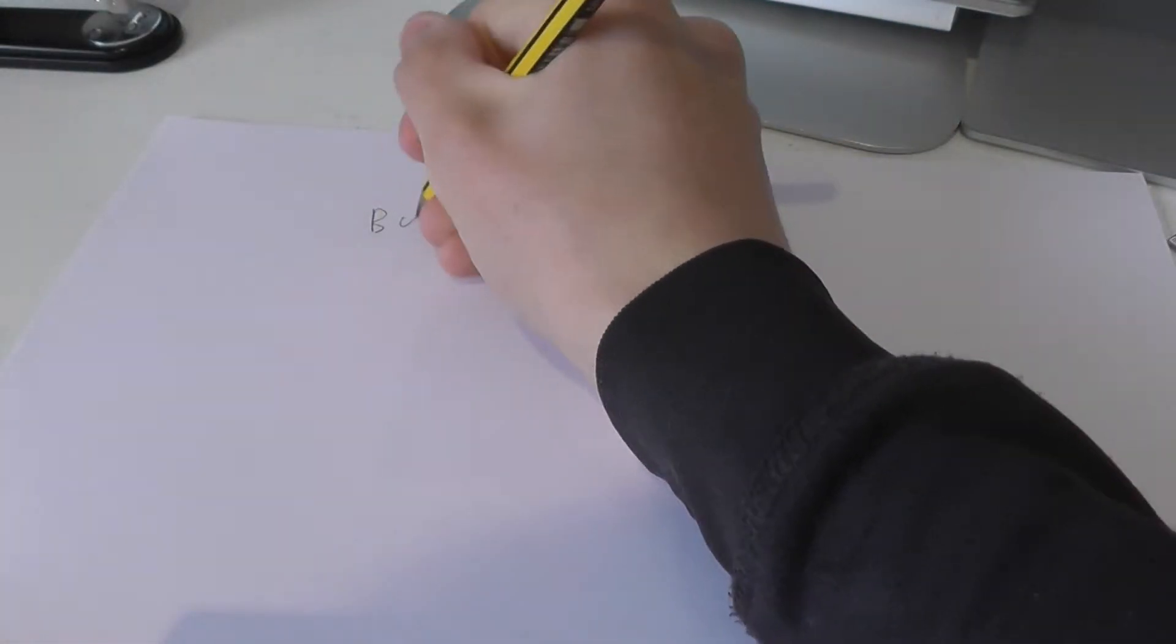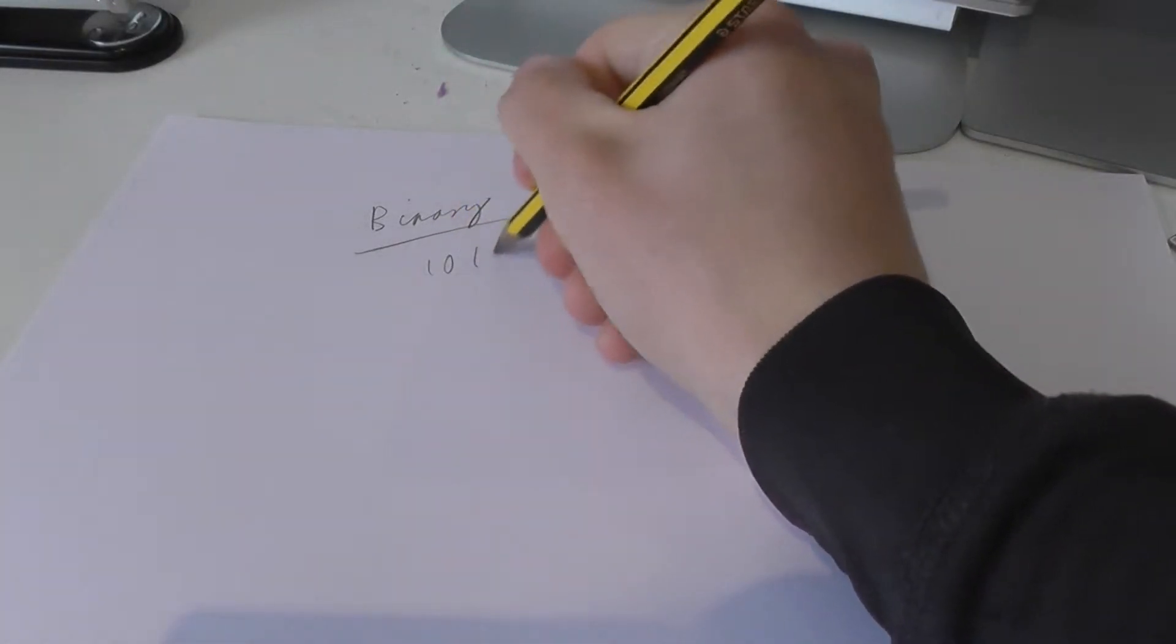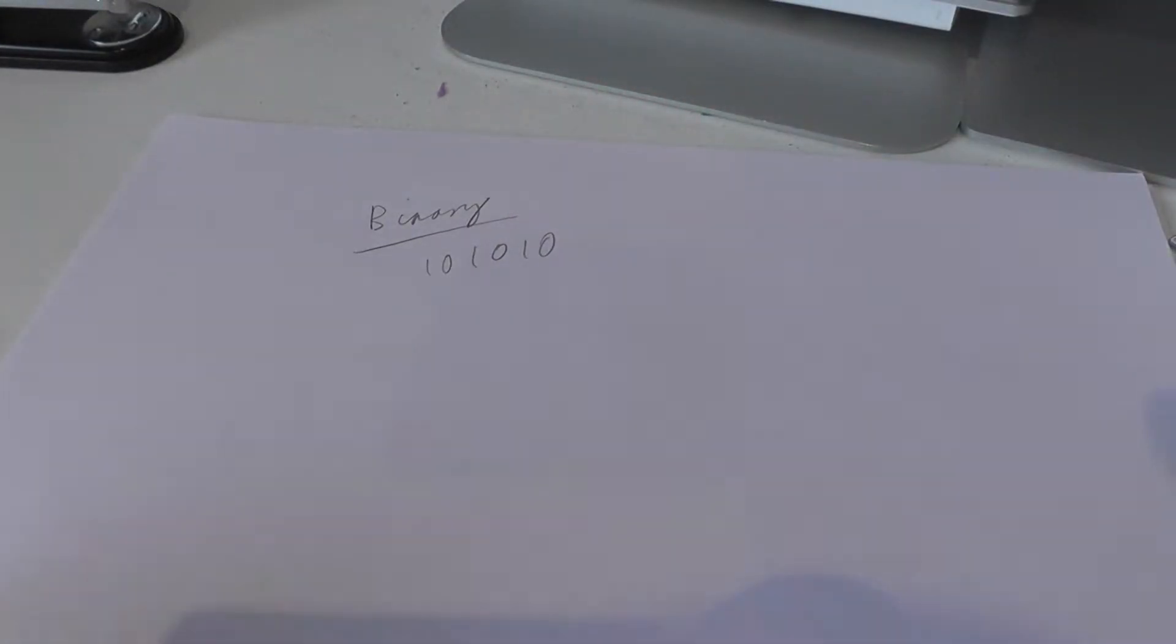I'm going to be explaining to you today how binary works. Binary is the string of ones and zeros that you usually see about how computers understand things. But what does binary actually mean? What is a byte? What is a kilobyte? That is what I'm here today to explain to you.